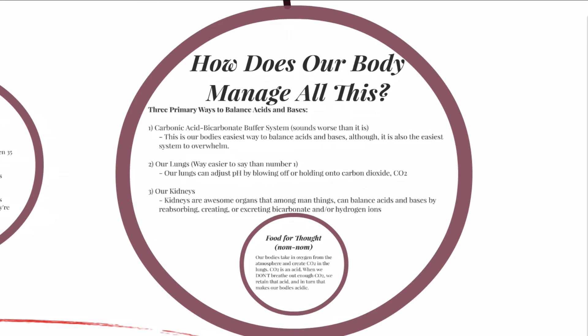So how do our bodies manage all this? There are three primary ways to balance acids and bases in the human body. The first is the carbonic acid bicarbonate buffer system. This is our body's easiest way to balance acids and bases; however, it's also the easiest system to overwhelm. The carbonic acid to bicarbonate ion ratio is about 20 to 1, so you can imagine that system is easy to overwhelm when we tax it too much.